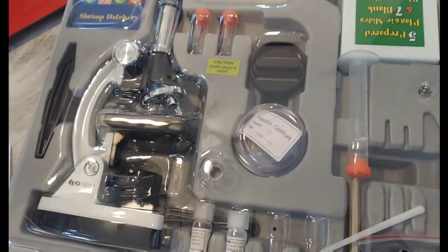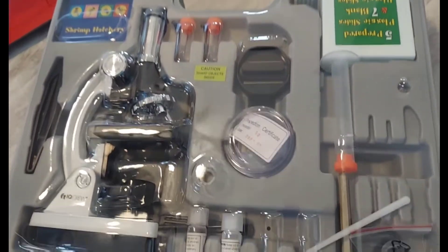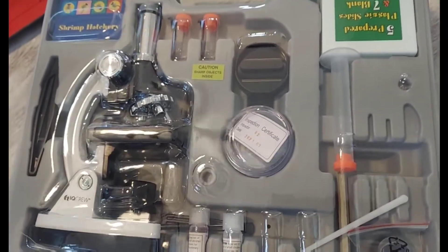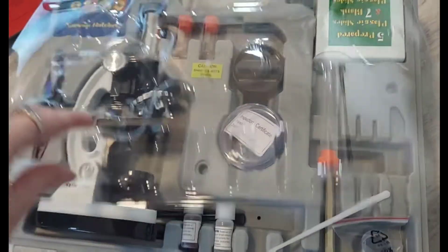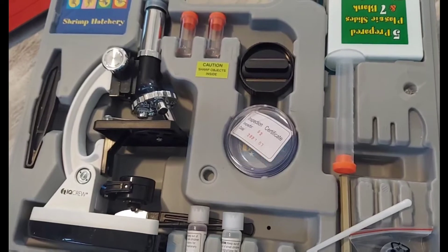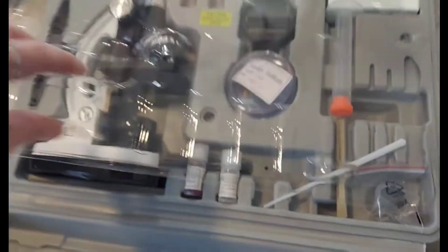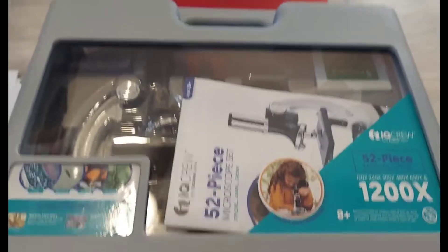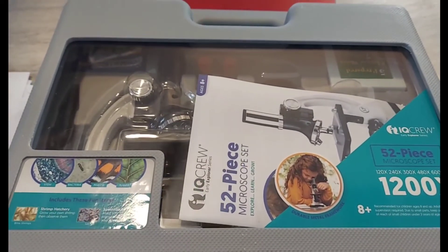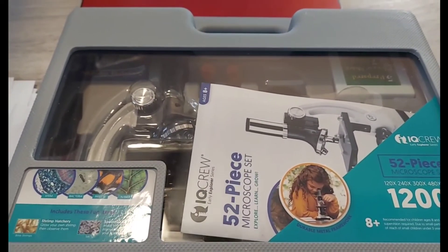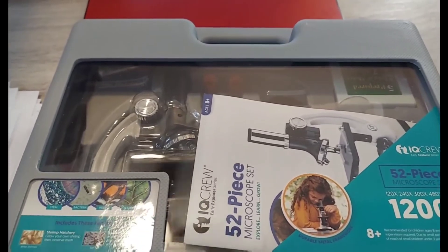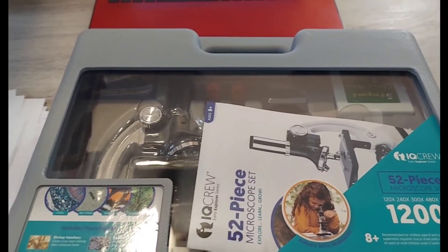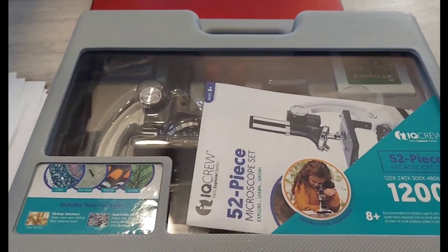He may end up doing dual credit in his last two years of high school and he may end up doing a science class there so he'll be able to use the more expensive equipment then. But this one worked really well for our purposes so far this year. I'm going to show you guys some pictures of the science experiments that we've done so far and are going to do and then afterwards I'll show you the actual material we've used and where I'm going to purchase it from.